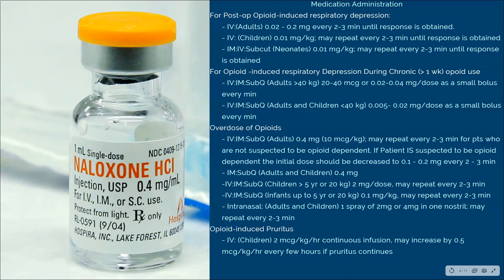There are four particular reasons why naloxone would be administered: for post-op opioid-induced respiratory depression, for opioid-induced respiratory depression during chronic opioid use (chronic meaning more than one week), for opioid overdose, and for opioid-induced pruritus. For each of these, there are set parameters and dosages for adults, children, and neonates. Feel free to pause and read through the different administrations.